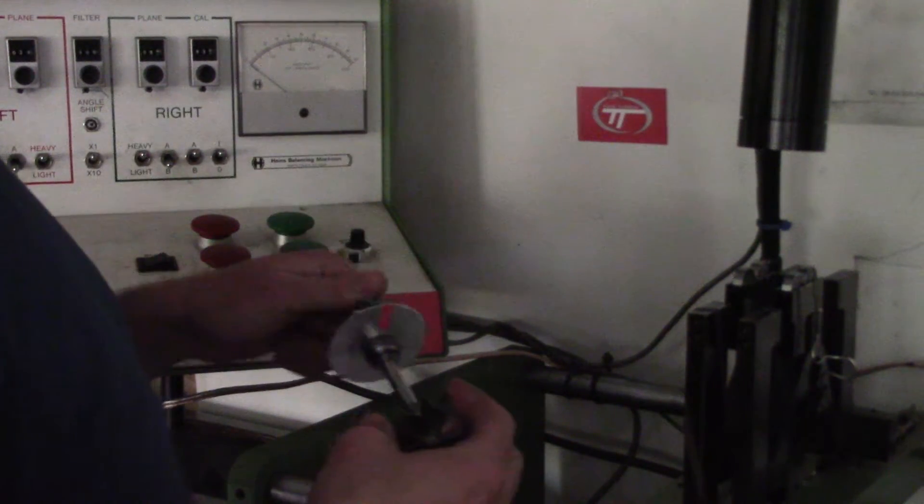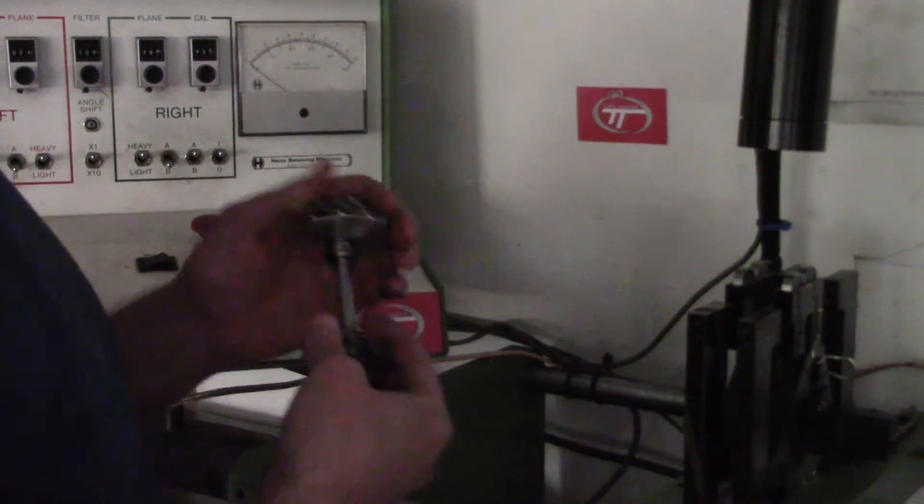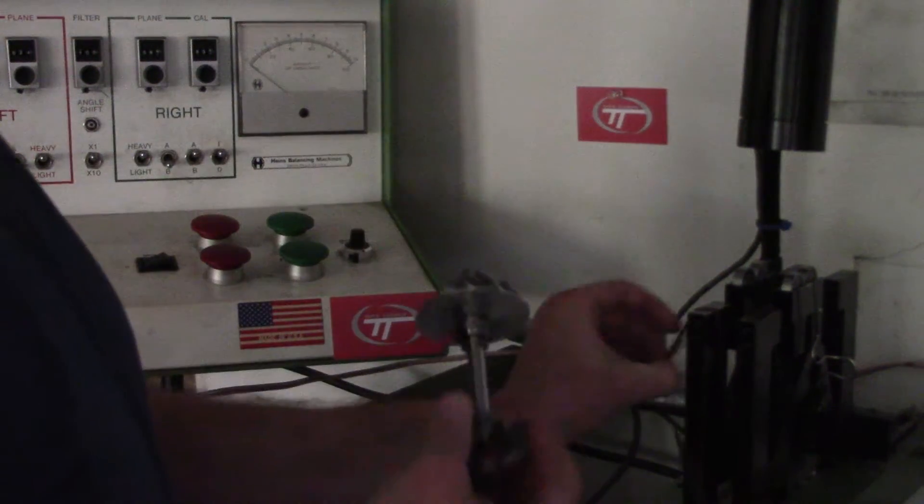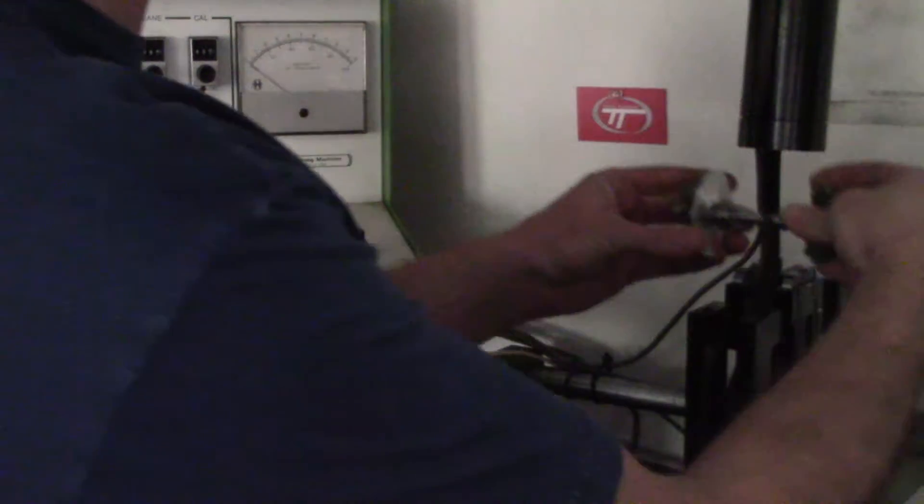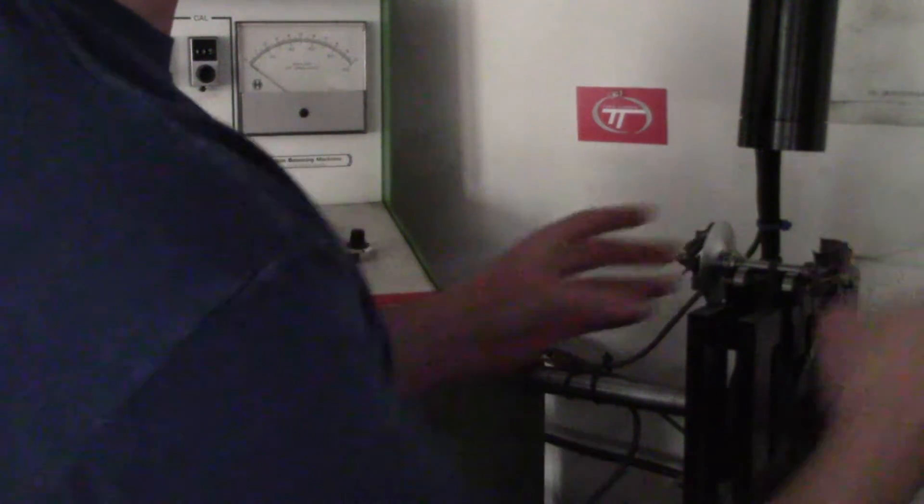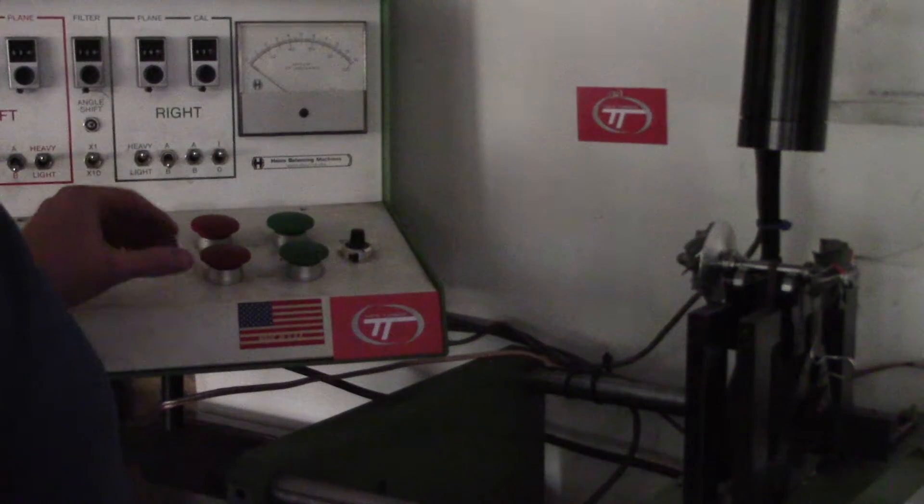I'm going to throw it on the balance machine to show you the basic setup. This is a tabletop TC3. It's a great machine. I use it all the time. I got the lights off, so hopefully it won't affect the machine too much.